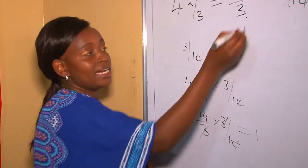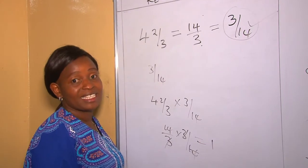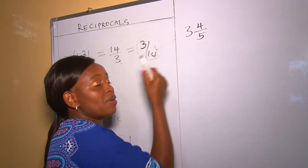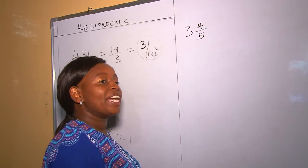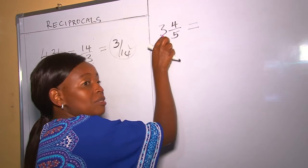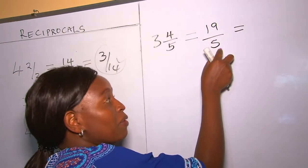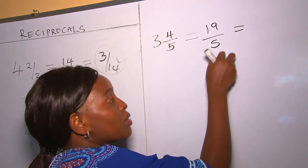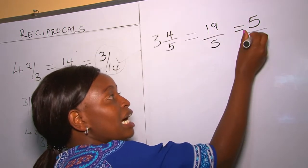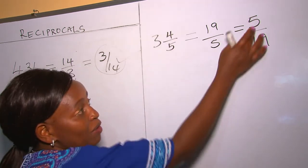Let's have another example. Here three is a whole number and four over five is a fraction, so this is a mixed fraction. Before getting the reciprocal, the first thing is to change it into an improper fraction. Five times three is fifteen, fifteen plus four is nineteen, giving nineteen over five. Now we find the reciprocal: the denominator five becomes our numerator and the numerator nineteen becomes our denominator. Therefore the reciprocal of three and four over five is five over nineteen.